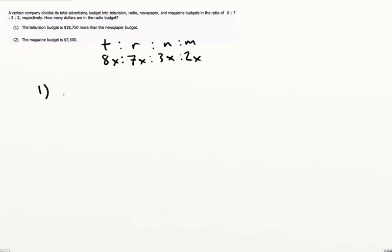Let's then look at the statement. So the television budget is $18,750 more than the newspaper budget. So what we're looking at here is simply 8x minus 3x. So that's television minus newspaper is 5x. And that's going to be $18,750. So if 5x equals $18,750, then we can get x. We don't need to actually go any farther than this. We see that we can get x. We can get the scaling factor, that is. So then if we wanted to find the newspaper budget, we'd just put x into 3x here. And that would give us the answer. So that is sufficient.